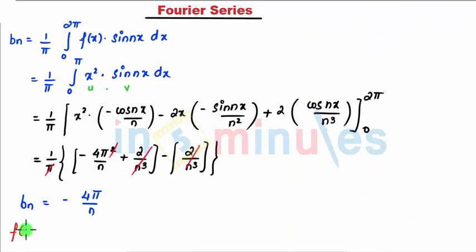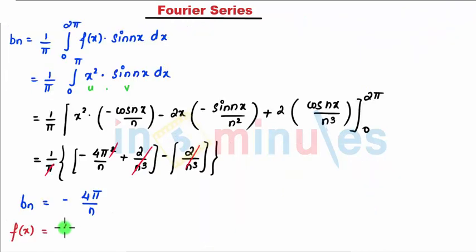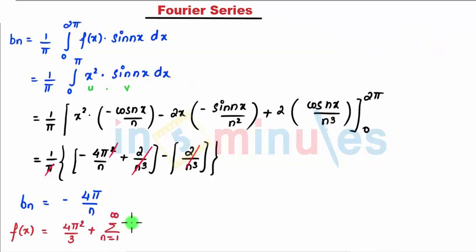f(x) equals: a₀ value is 4π² by 3, plus summation, that is n equals 1 to infinity, my aₙ value is 4 by n², so that comes 4 by n² cos nx